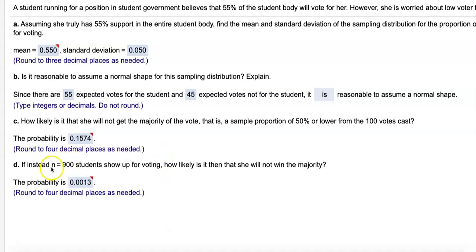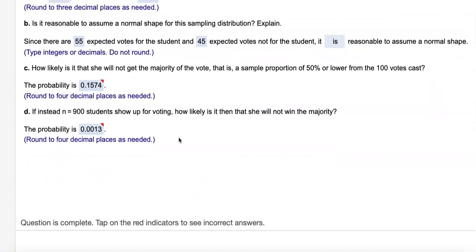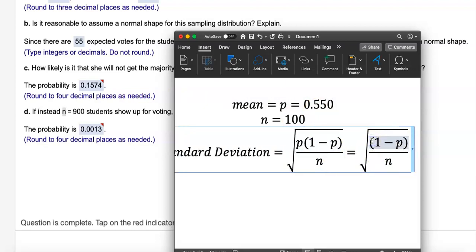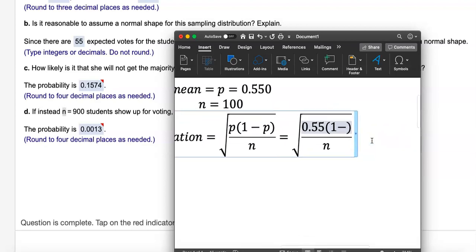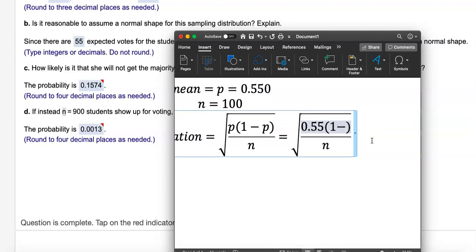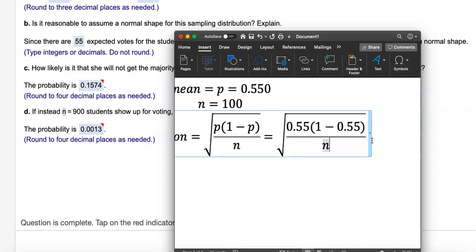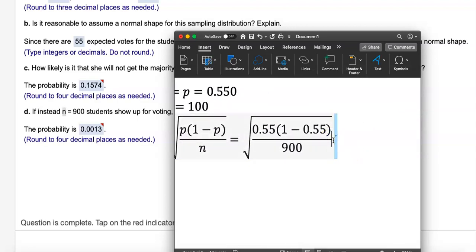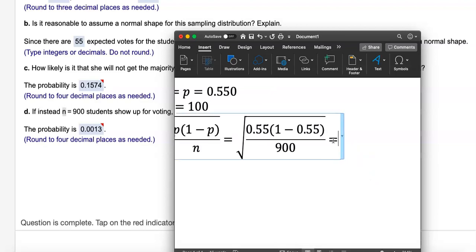All right, the last one. Remember her original sample size was only hundred. But what if she on this time assume that the sample size is nine hundred? For this one, you will have to find the new standard deviation. Mean stays the same. Remember mean is still 0.55. But the standard deviation, with the different sample size, we're gonna have to divide by a different n value. When you increase the sample size the standard deviation will get smaller.